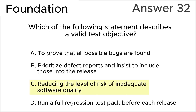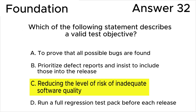The correct answer is C: reducing the level of risk of inadequate software quality. According to the ISTQB syllabus, we will see the exact quotes for this a little later. All the rest of the answers are wrong.